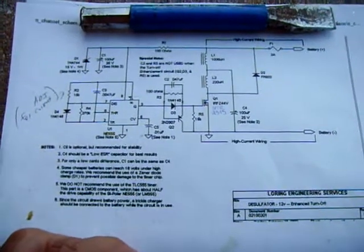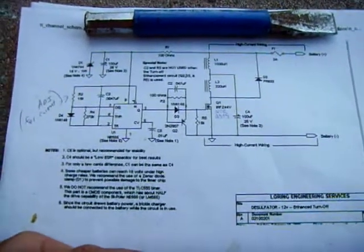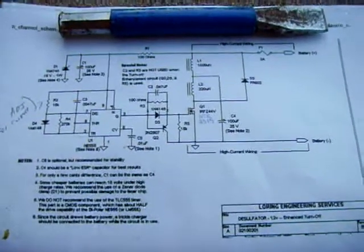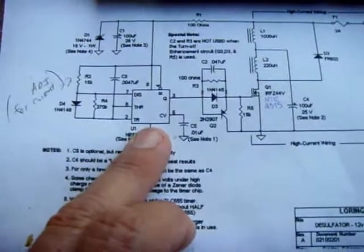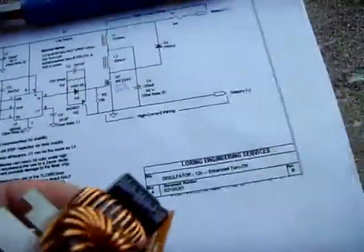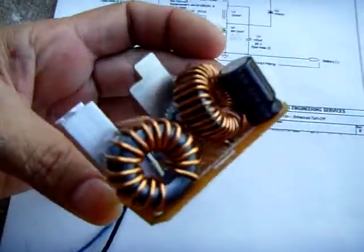Okay, this is a 12-volt lead acid battery desulfate circuit made with an N-channel MOSFET, 555 IC, and a bunch of inductors which I had to make. I made these two inductors right here.